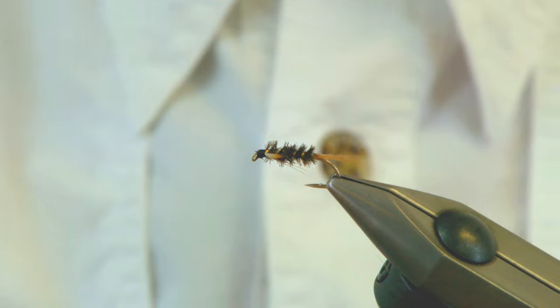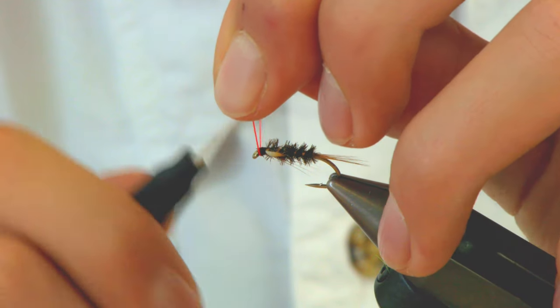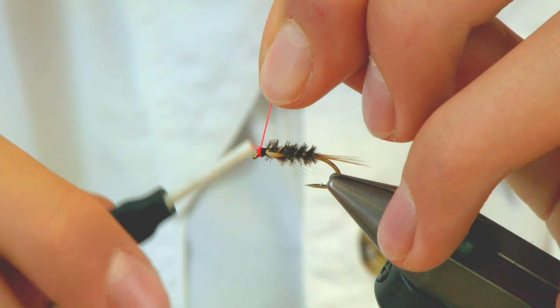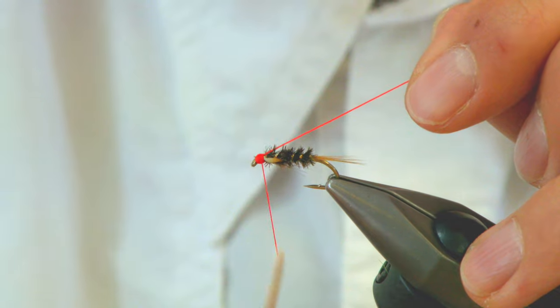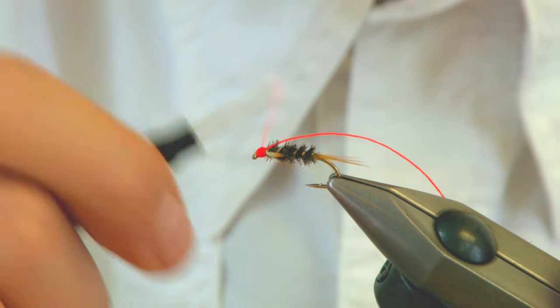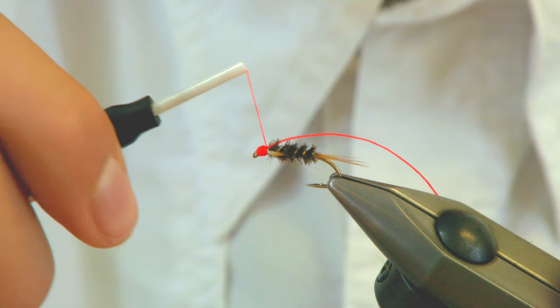But what I like to do is add a little bit of color to the head. With your Glow Brite, just going to come in and just do a few turns to get a nice bright head on the fly.